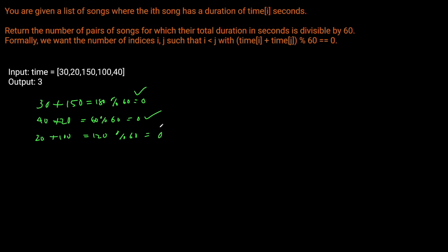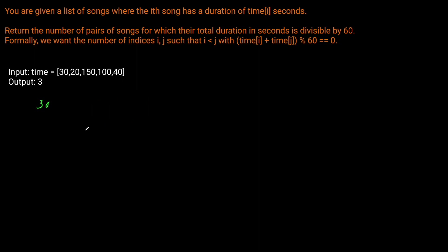So that's where we get our three solutions from. How do we actually solve this problem? There are really two cases. Either a song's length is directly divisible by 60, or we're going to have some remainder and we need to find another song whose length, when added to the current one, gives us a total that is modulo 60 equal to zero.